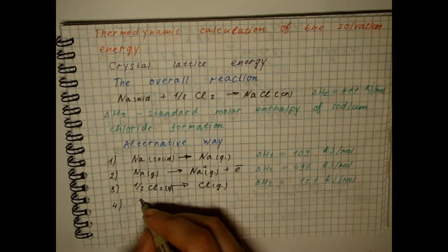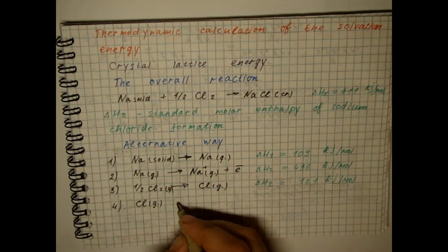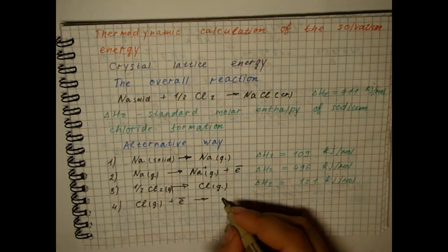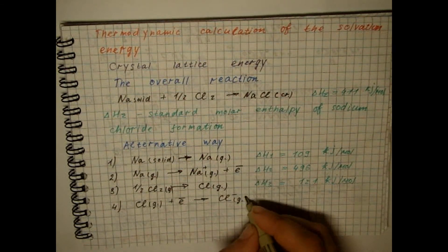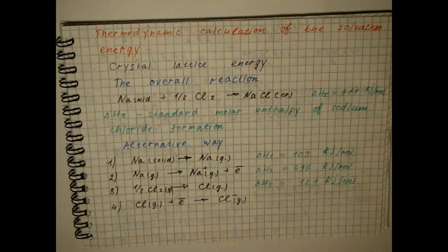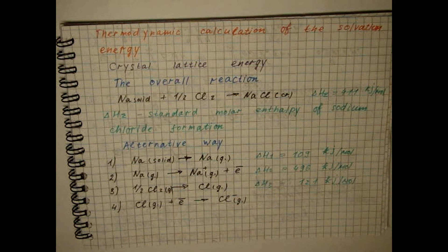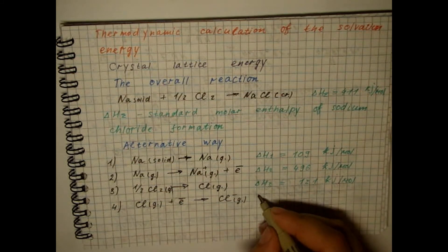The next stage is the ionization of chlorine. Its enthalpy corresponds to the first electron affinity energy of chlorine — that is, the amount of energy released when the atom joins an electron.